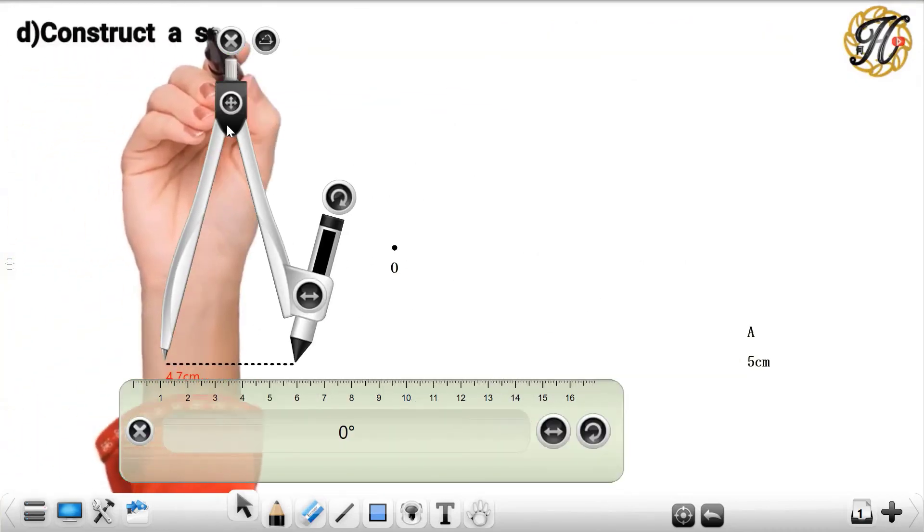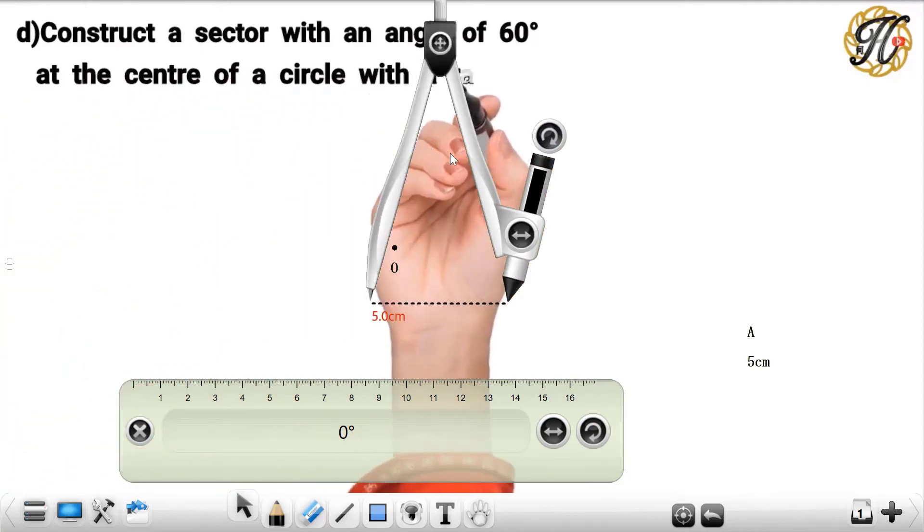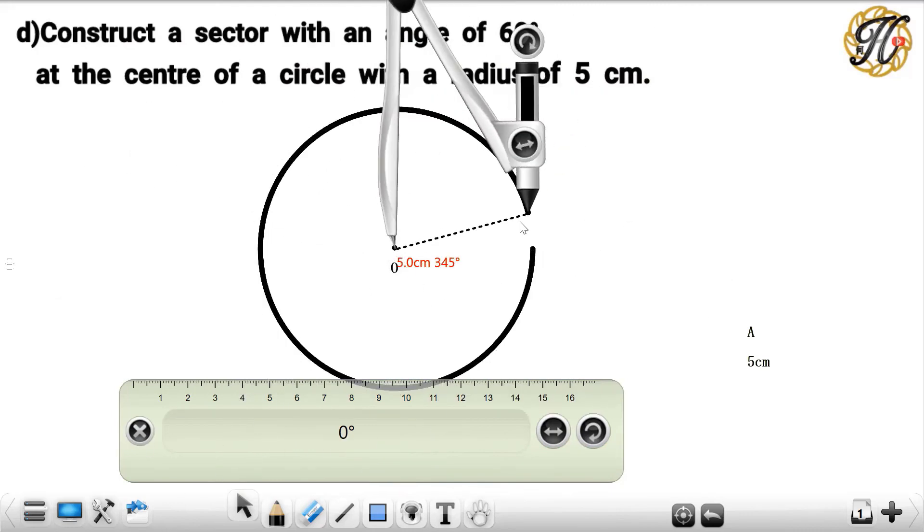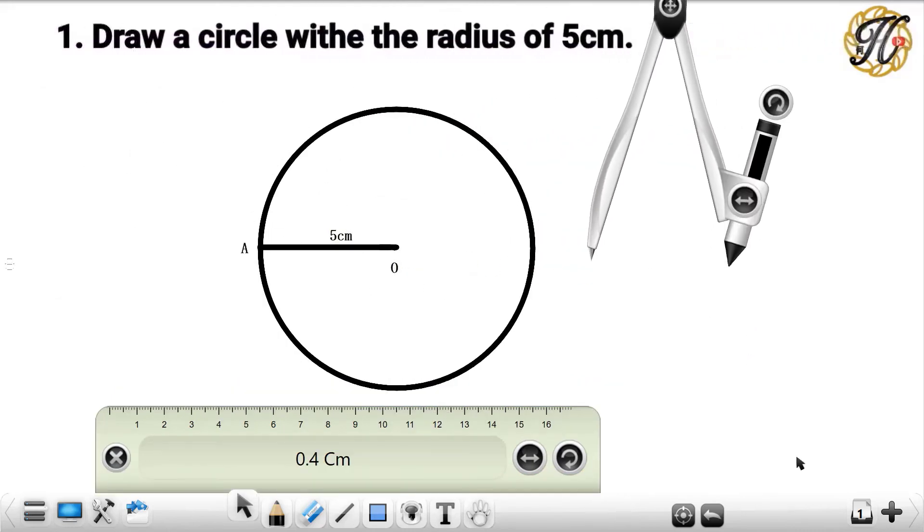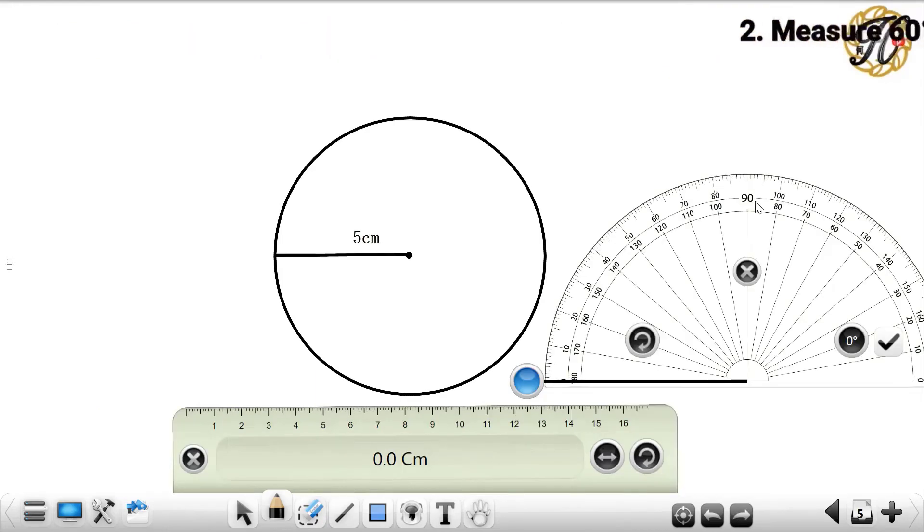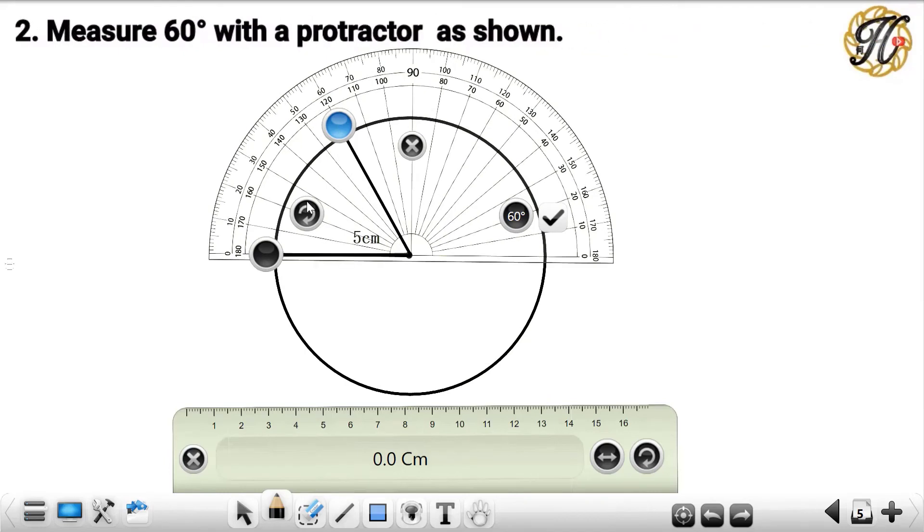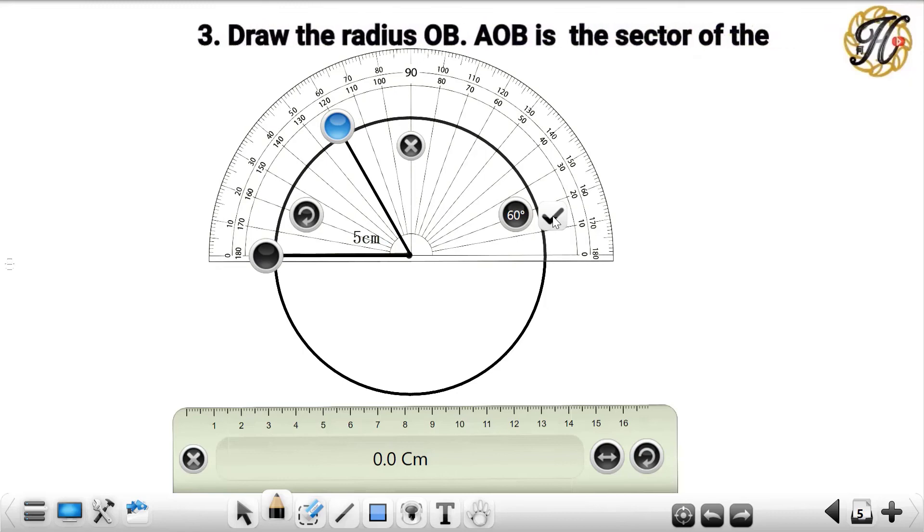Last example, construct a sector with an angle of 60 degrees at the center of a circle with a radius of 5 cm. First, draw a circle with a radius of 5 cm. Next, measure 60 degrees with a protractor as shown. Then draw the radius OB. AOB is the sector of the circle.